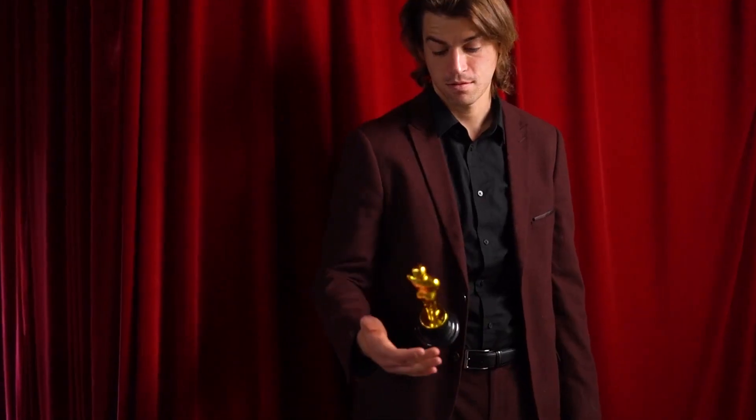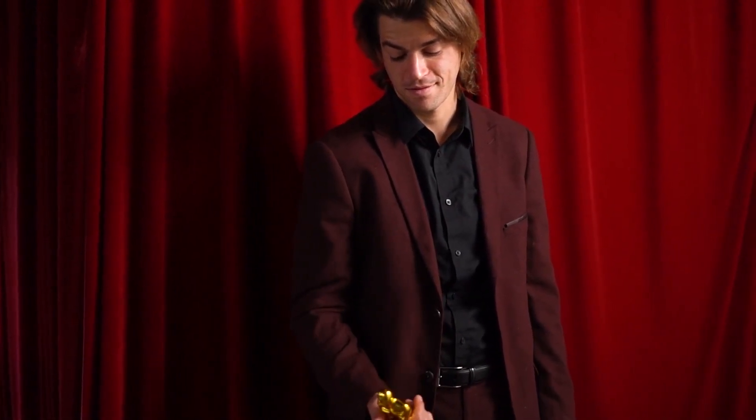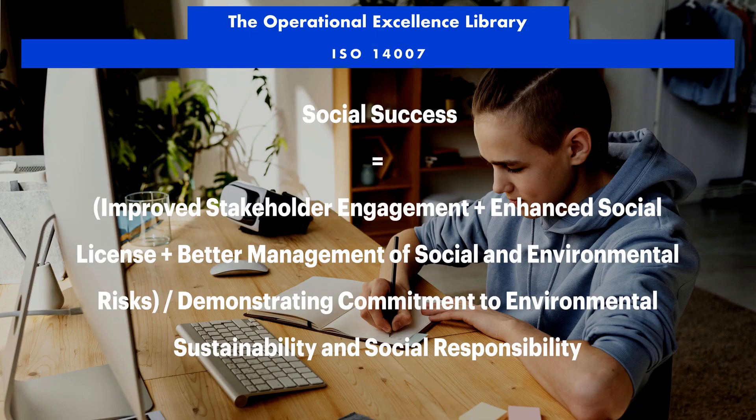3. Implement Environmental Management Accounting Tools and Techniques: ISO 14007 promotes the use of environmental management accounting tools and techniques, such as life cycle costing, environmental footprint analysis, and carbon footprint analysis. These tools enable organizations to assess the environmental implications of their operations and supply chain, identify opportunities for improvement, and develop strategies for reducing environmental impacts.